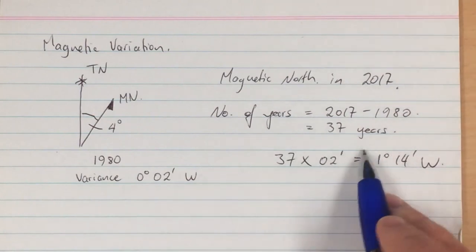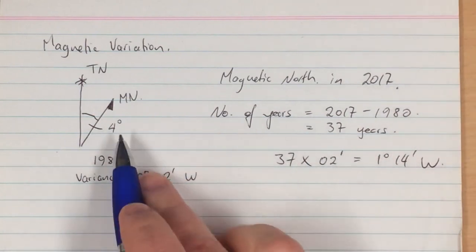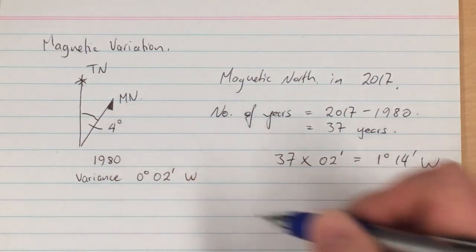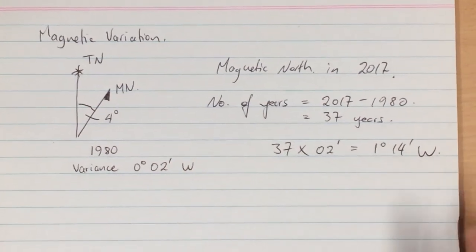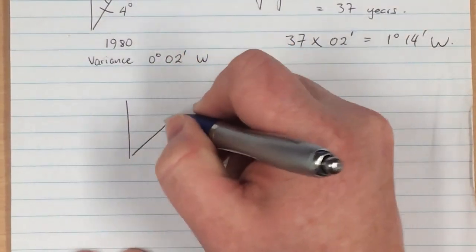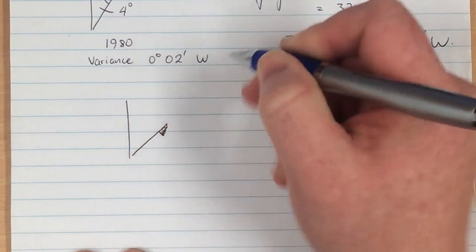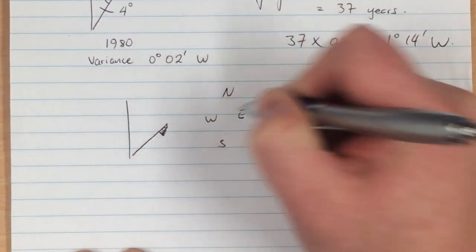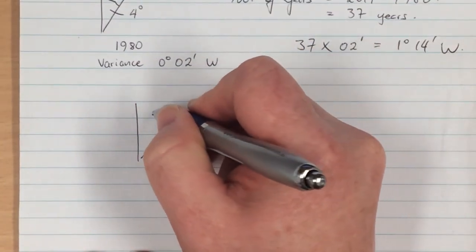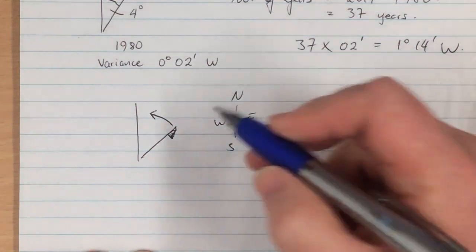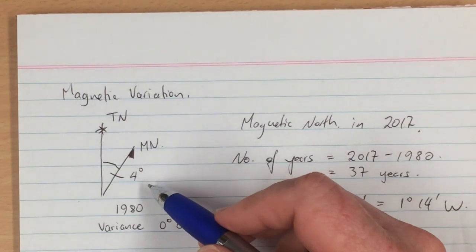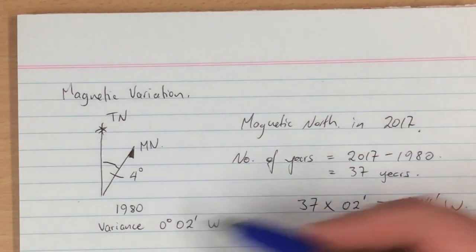That means that over the period of 37 years magnetic north has drifted in a westerly direction 1 degree in 14 minutes. So if you consider what drifting in a westerly direction will do to magnetic north, a westerly direction is an anti-clockwise direction. So if magnetic north was at 4 degrees from true north in 1980,